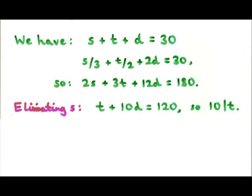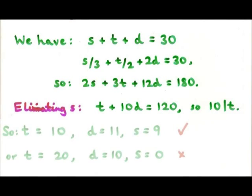The first thing you notice is that 10d is 10 times something, so t must also be 10 times something. So t is 10, 20, or 30. Well, it can't be 30 because we're only allowed 30 birds, and you must have at least one of each type. So t is 10 or 20. If t is 20, you find that d is 10, but then s is 0, and we don't allow that. So the only possible solution is t equals 10, d equals 11, and s equals 9.